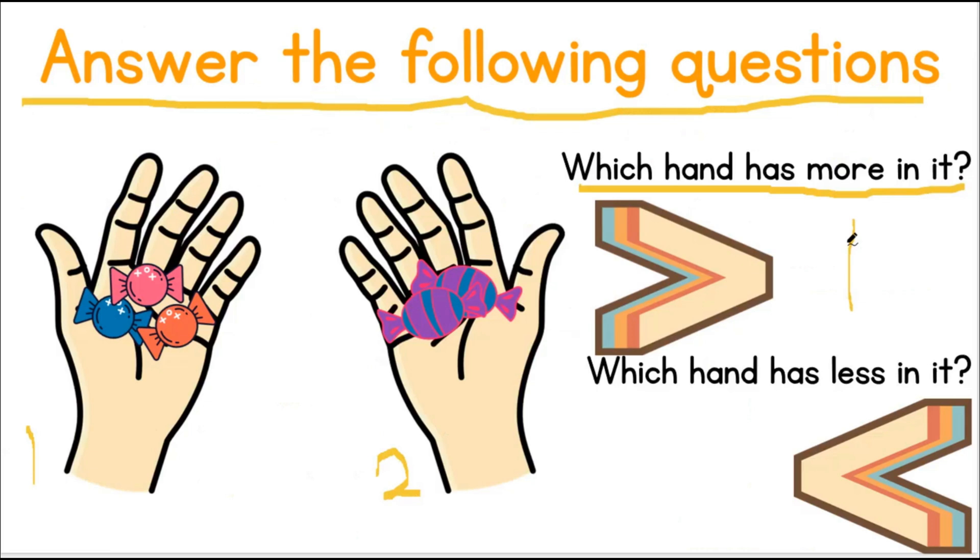Which hand has less in it? Hand number 2 has less candy in it. It has 1 less candy than hand number 1.